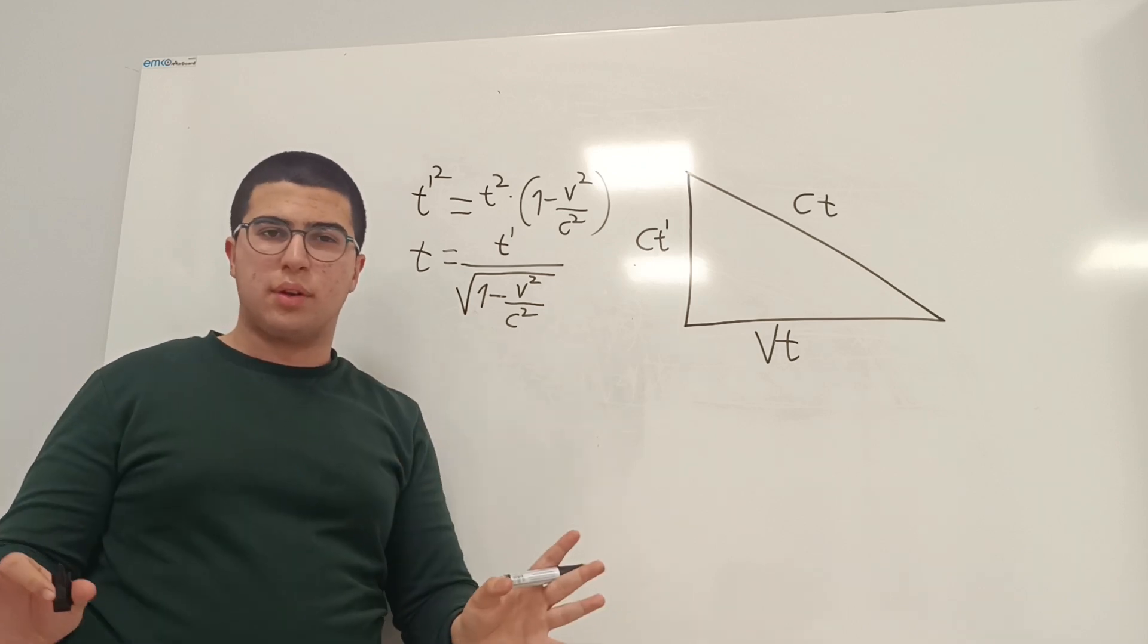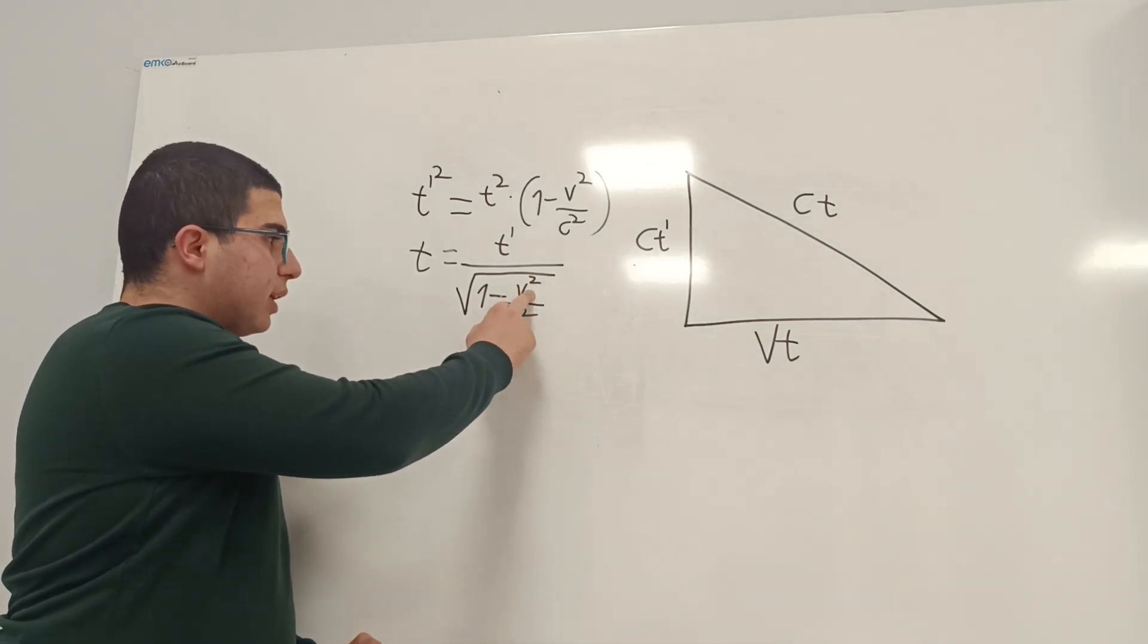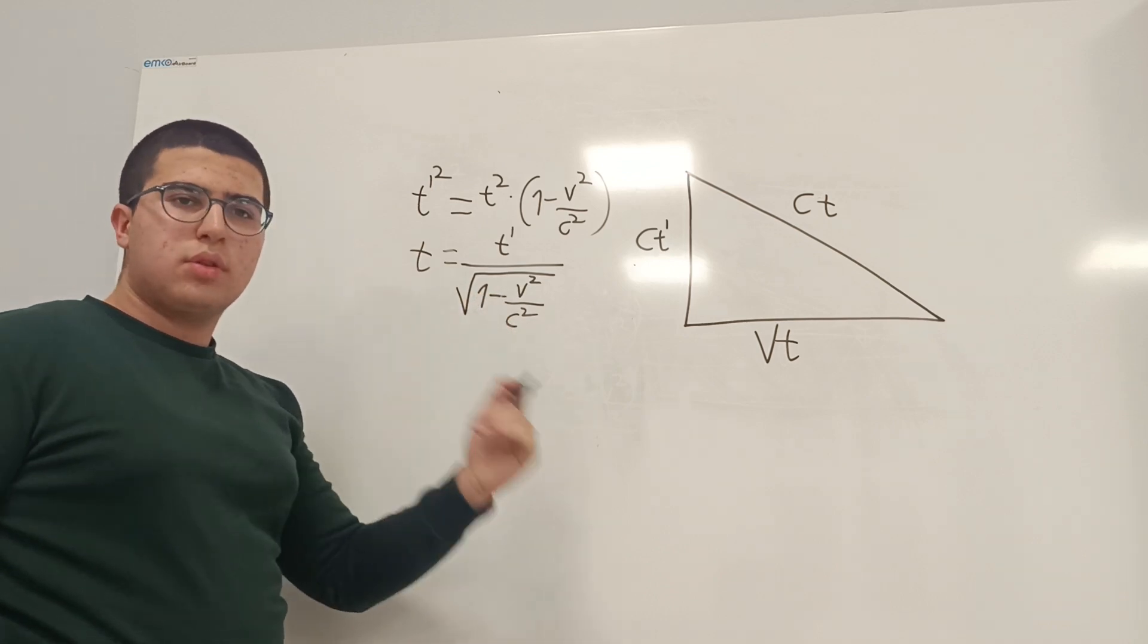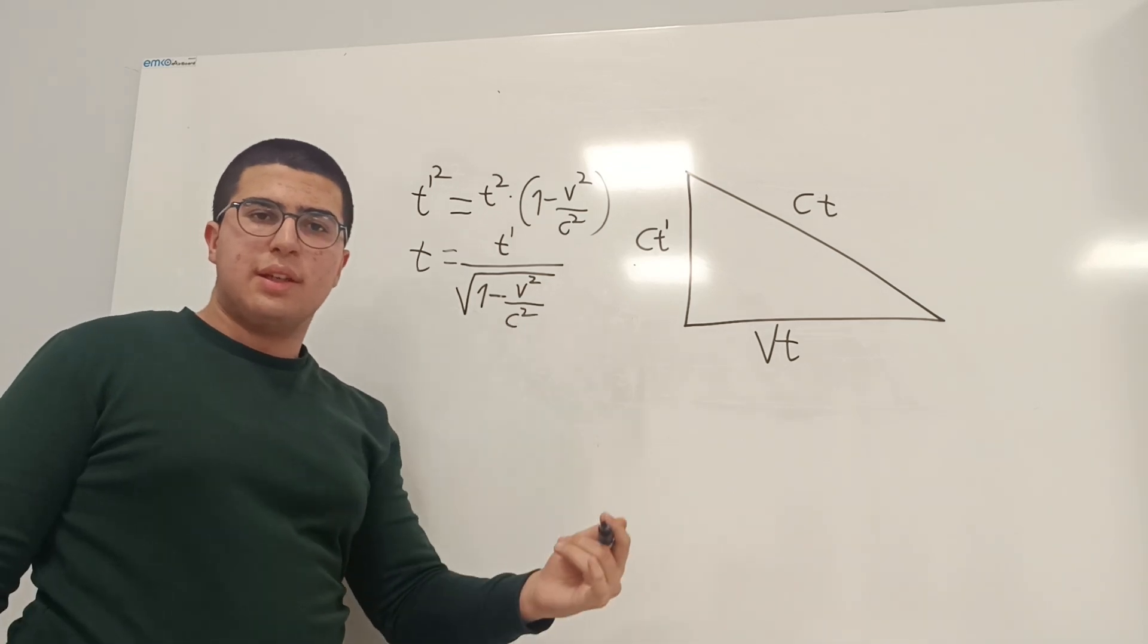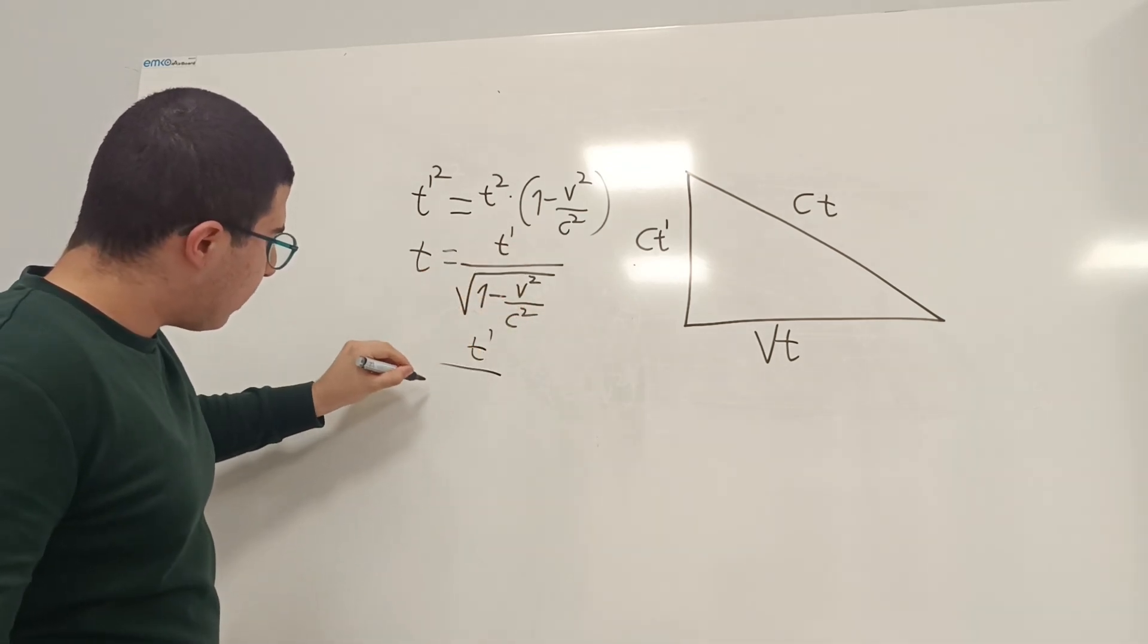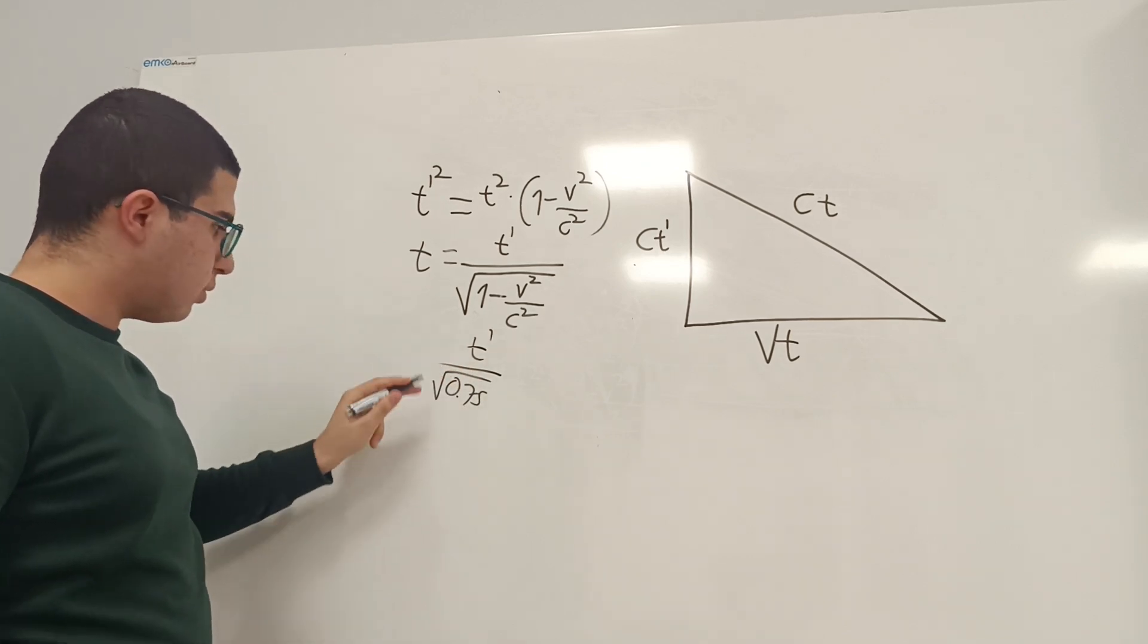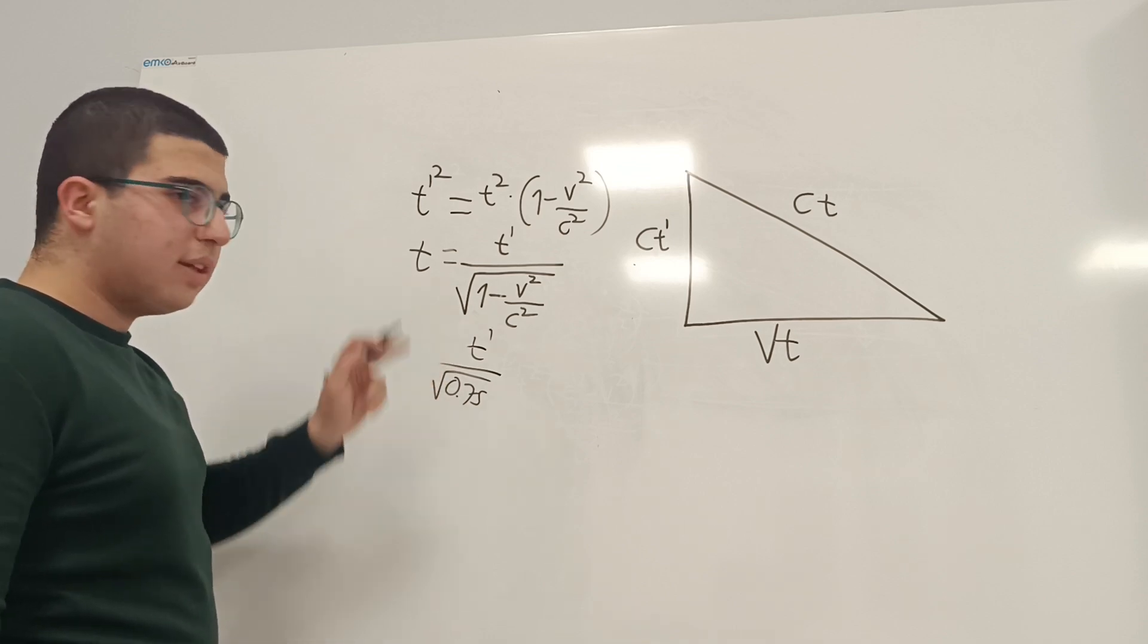But if you are moving half the speed of light, if you plug in 0.5c instead of v squared, this term becomes square root of 0.75, and it is slightly greater than t. So, it is like t prime divided by square root of 0.75. So, this is less than 1. So, this is greater than t.